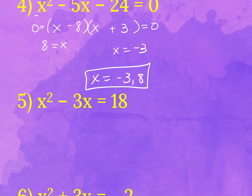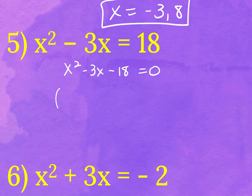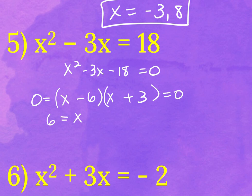For problem five, you first have to move the 18 over, so x squared minus three x minus 18 equals zero. Nothing in front of the x squared term, so we're looking for the factors of negative 18 that sum to negative three, which are negative six and positive three. Then split and solve — I get x equals six and x equals negative three.